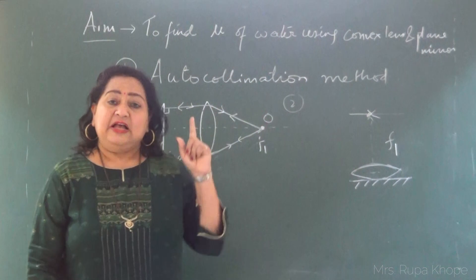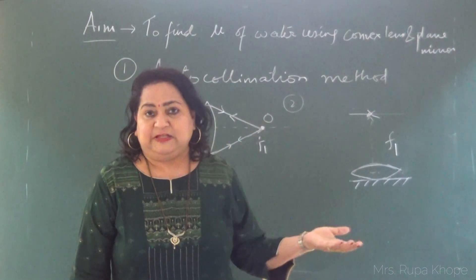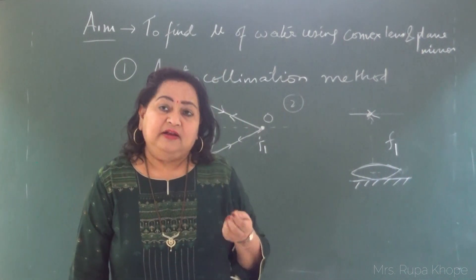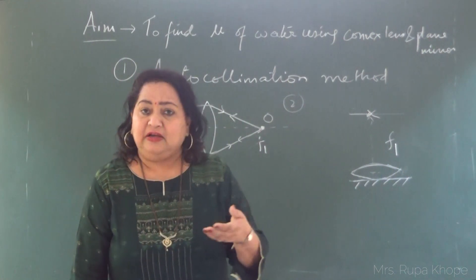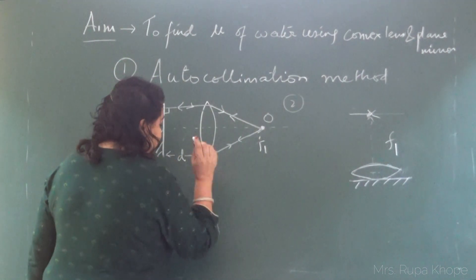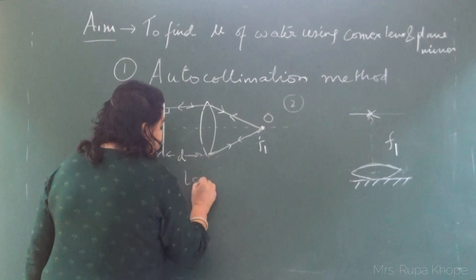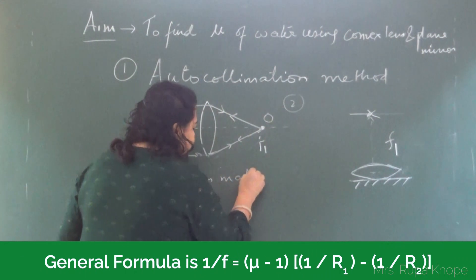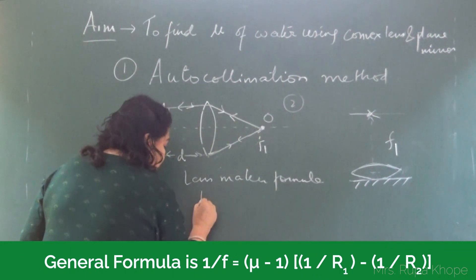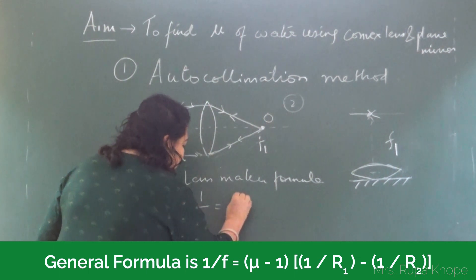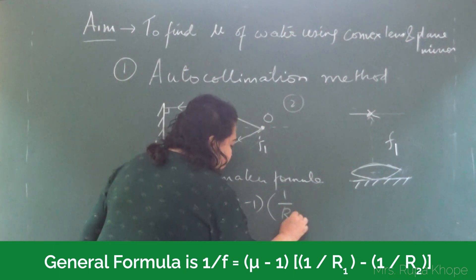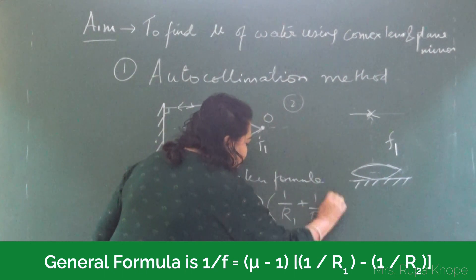How to remove the parallax has already been explained in a previous experiment — you can click the link in the description box for that information. Now let me do some calculations. You already know the Lens Maker's formula: 1/f = (μ − 1)(1/R1 + 1/R2).